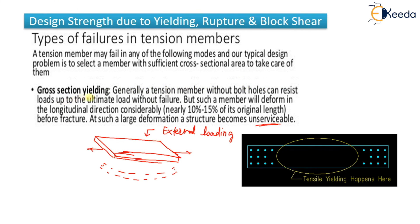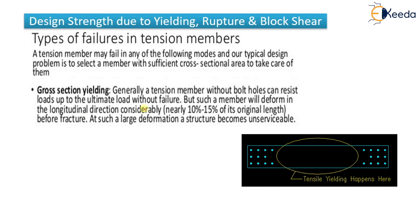Generally, a tension member without bolt holes can resist loads up to the ultimate load without failure. But such a member will also have deformation in the longitudinal direction — generally 10 to 15 percent of its original length. Before fracture there will be large deformation, and if deformation is very large, the structure becomes unserviceable. That type of failure is cross section yielding, i.e., deformation failure.